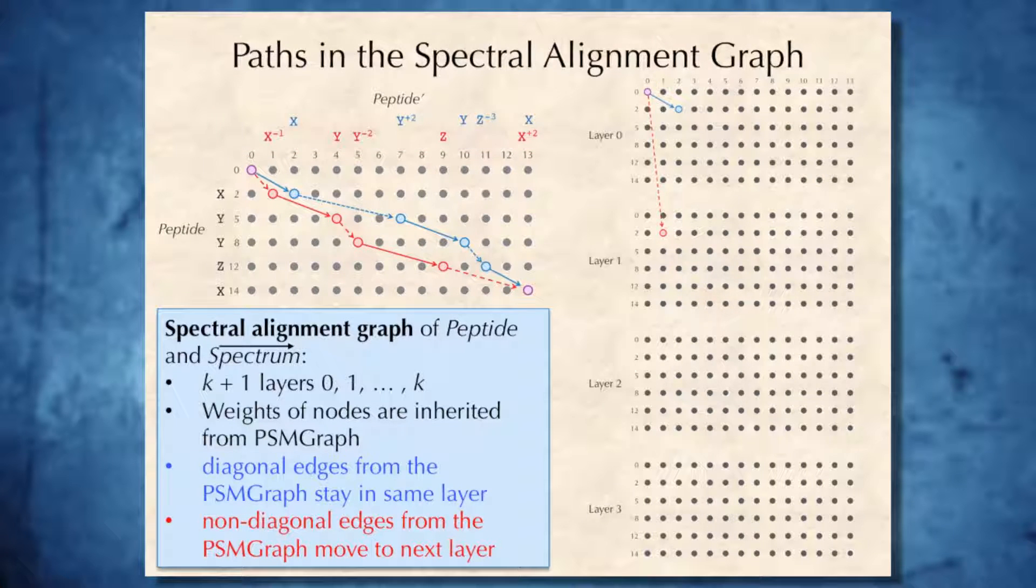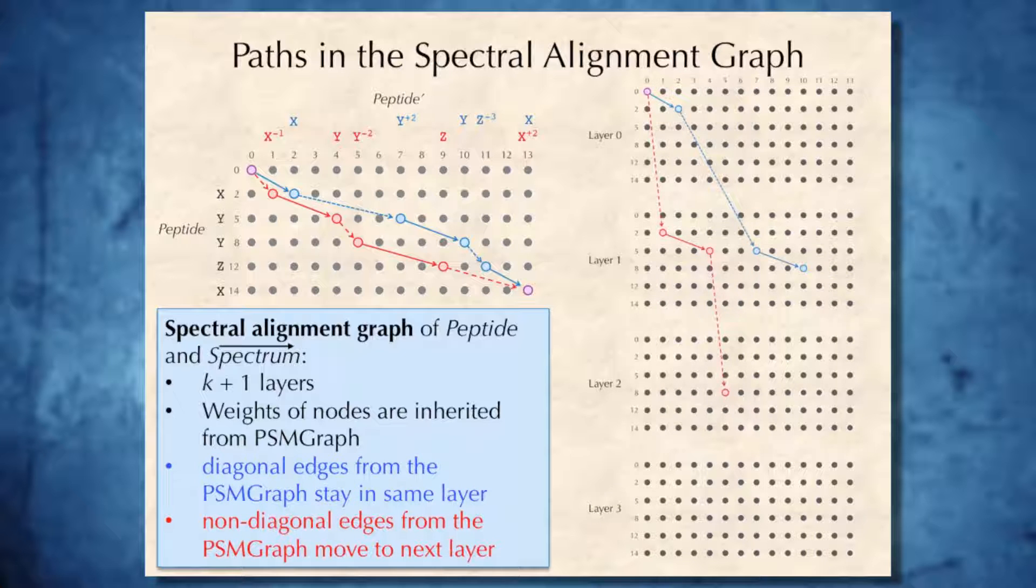Diagonal edges from the PSM graph will stay on the same layer. For example, the blue edge stays on the same layer in this case. But non-diagonal edges from the PSM graph will move to the next layer, like in the case of the non-diagonal red edge on the right of this slide. Now, for the case of the next pair of edges, the same rule applies.